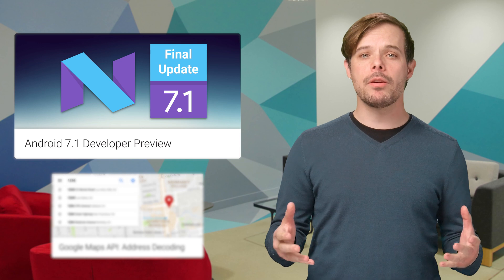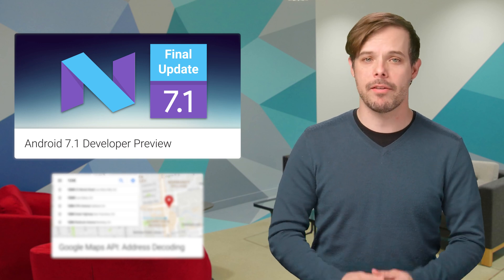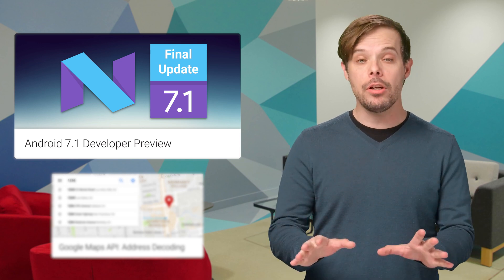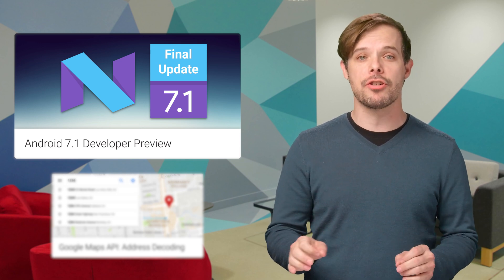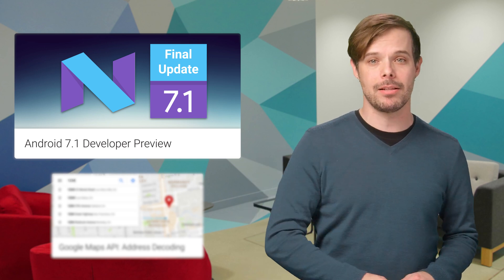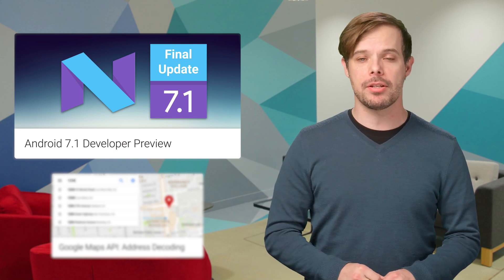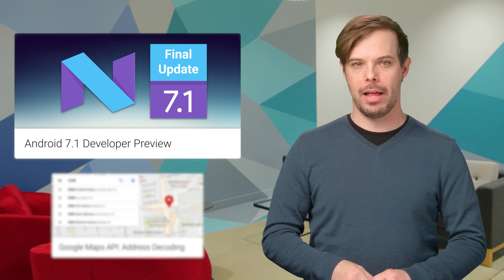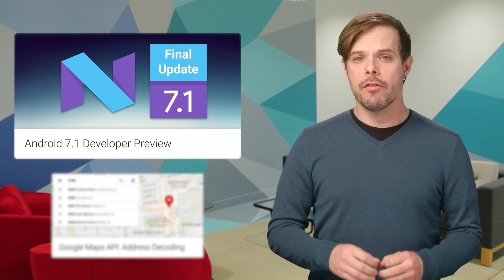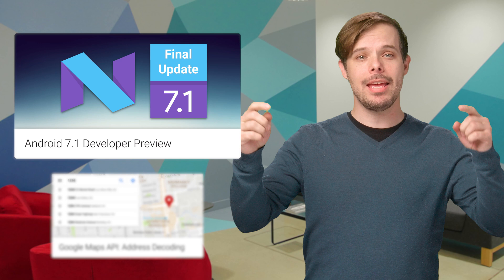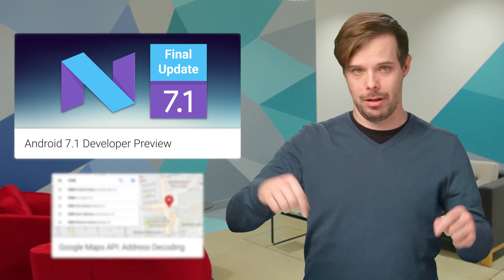We recently rolled out the final update to the Android 7.1 developer preview. It includes the developer features already available on Pixel and Pixel XL devices, and adds optimizations and bug fixes on top of the base Android 7.1 platform. For more information on what's included, check out the post linked in the description below.